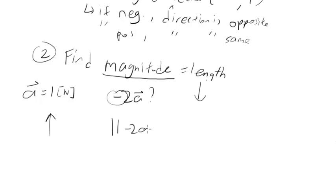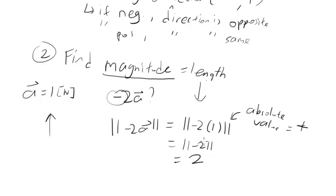Magnitude of 2A equals to the scalar, so negative 2, multiplied by the magnitude of the vector inside, so it's 1. So, it's negative 2 times 1, which is equal to just negative 2. And since, remember, the absolute value, the bars means absolute value, which means it's positive.